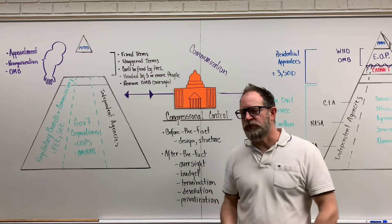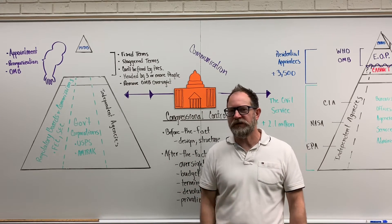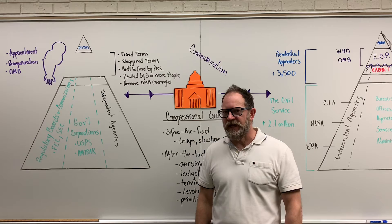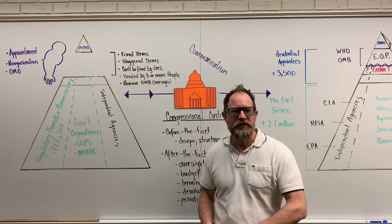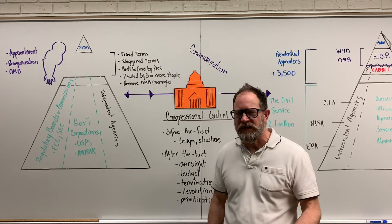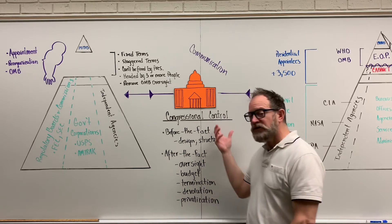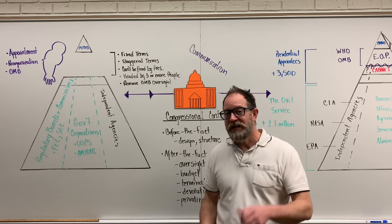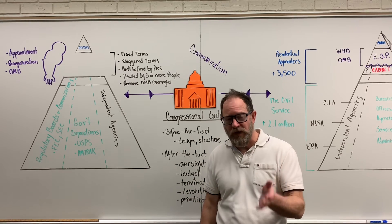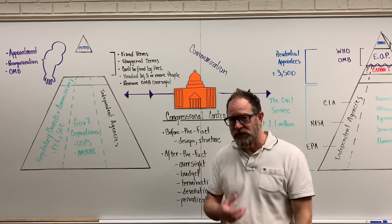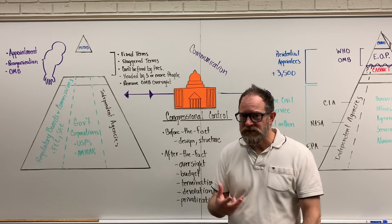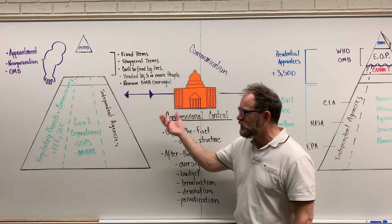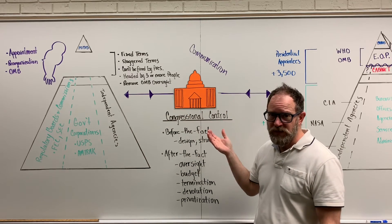One last thing before moving to a new topic: let's talk about communication. Congress and elements of the bureaucracy - whether a particular agency or executive department - are in constant communication. On the congressional end, that's going to take the form of standing committees or subcommittees. If you're thinking iron triangle, you are correct - that's what we're talking about here: how policy and the laws of the nation are actually crafted. I illustrate this with purple lines showing two-way communication between elements of the bureaucracy and congressional committees.